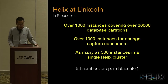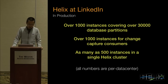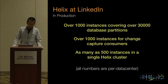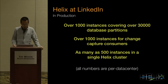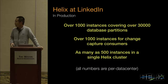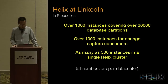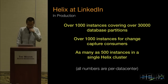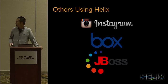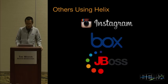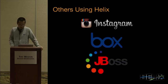Here are a few production numbers about Helix: over 1,000 instances covering 30,000 database partitions managed by Helix, and over 1,000 instances for change capture consumers. For a single Helix cluster, we can handle as many as 500 instances. All these numbers are per data center. Helix is also used externally, with examples including Instagram, Box, and Gbox.